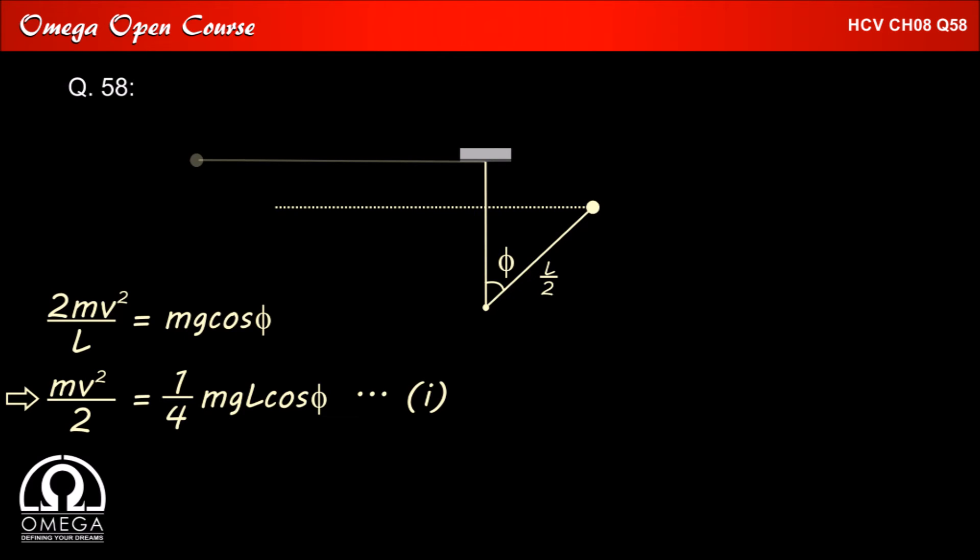Since the length of the string from the peg to the bob is L by 2 the height of the bob above peg is L by 2 cos phi. This means that bob has descended by L by 2 times 1 minus cos phi from its initial height. This decrease in gravitational potential energy must have provided the kinetic energy that bob has.